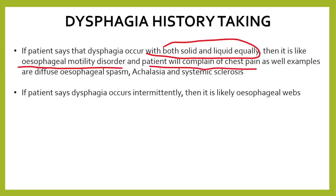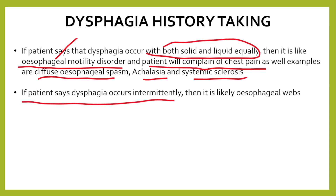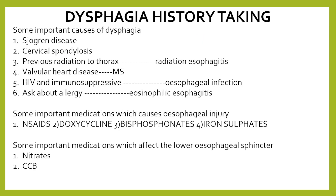With an esophageal motility disorder, the patient will complain of chest pain. Examples include diffuse esophageal spasm, achalasia, and systemic sclerosis, where there will be a problem with the motility of the esophagus. If the patient says dysphagia occurs intermittently, then it is likely an esophageal web.